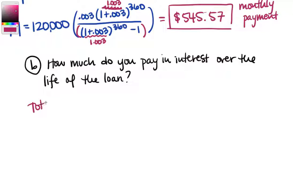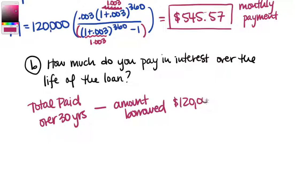To compute the interest, we need to find the total that we paid over those 30 years, and we're going to subtract off the amount that we borrowed. Because we pay back the amount borrowed plus extra, that extra is the interest. So we know what the amount borrowed was. That was $120,000. But we need to figure out the total paid over 30 years. We pay $545.57 each month, and we know that we pay that every month 12 times a year, and we do that for 30 years. And when we multiply all of that out, what we get is $196,369.20.